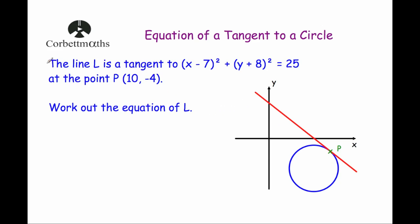So let's have a look at our first question. The line L is the tangent to the circle with equation (x − 7)² + (y + 8)² = 25, at the point P, which is the point (10, −4). The question says: work out the equation of the line L.